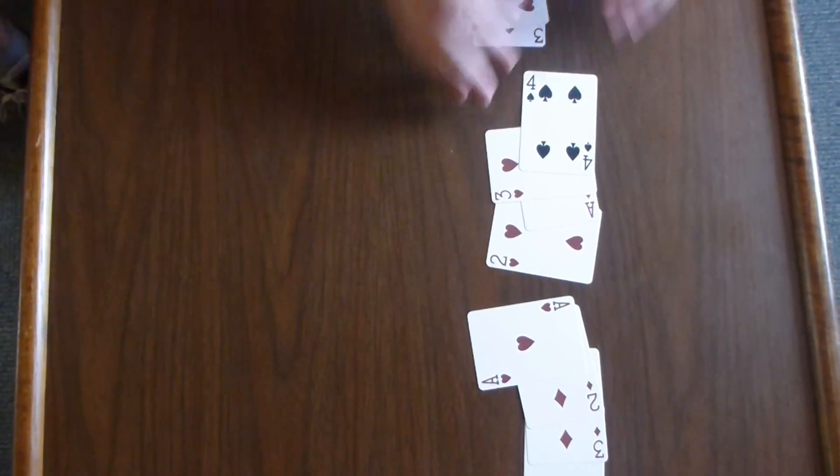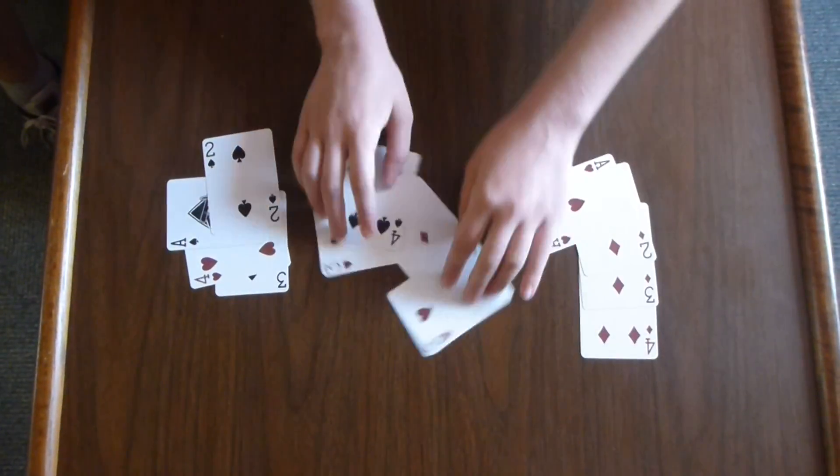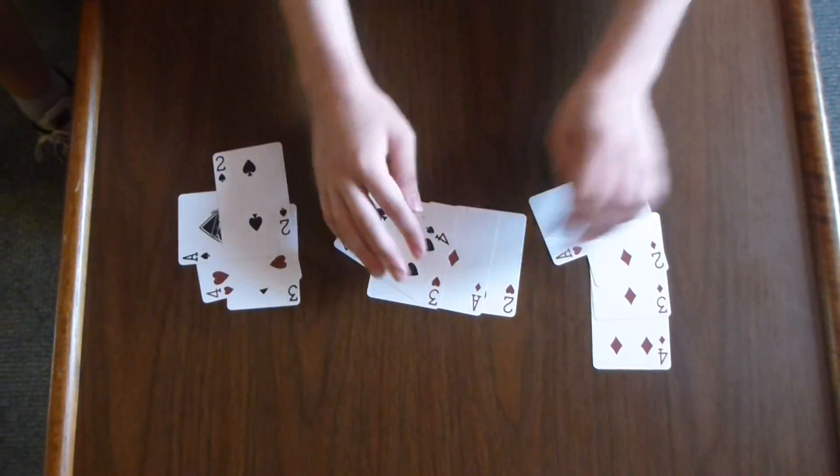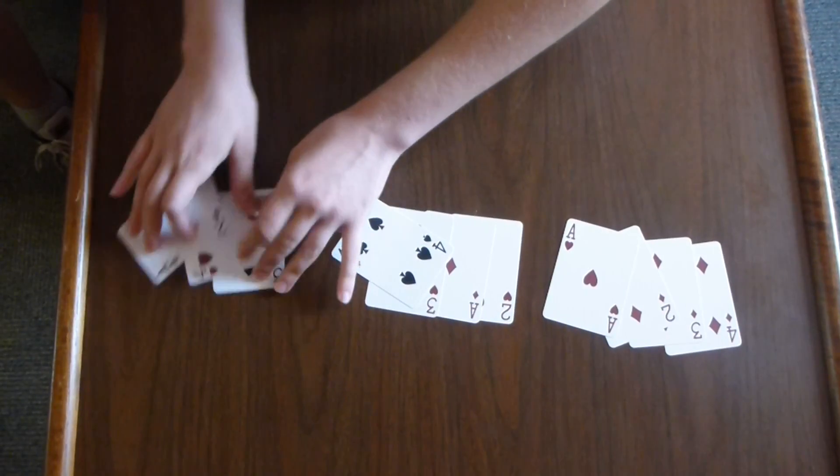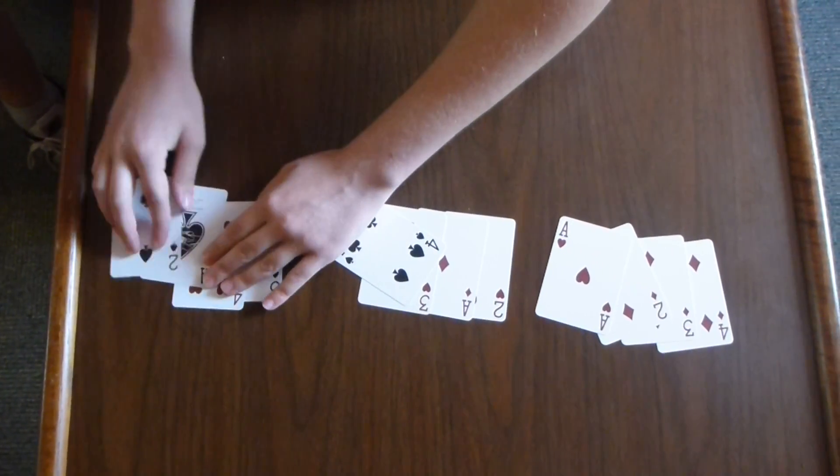Which means that we now have three groups of four cards, that all have the numbers ace-two-three-four, although they may not necessarily be in the same suit or even in the correct order.